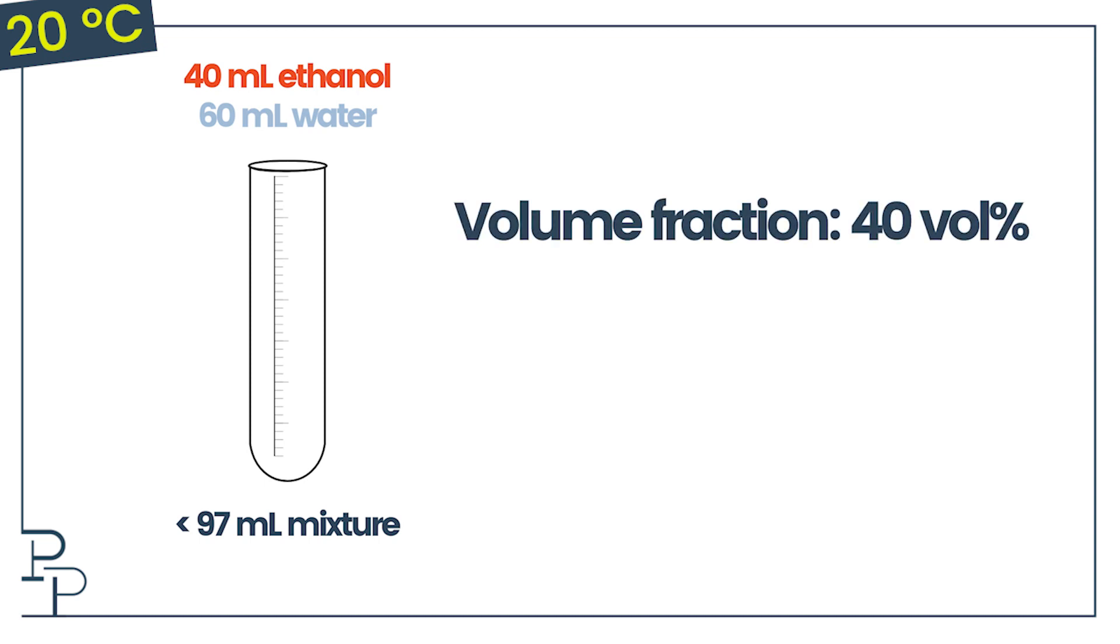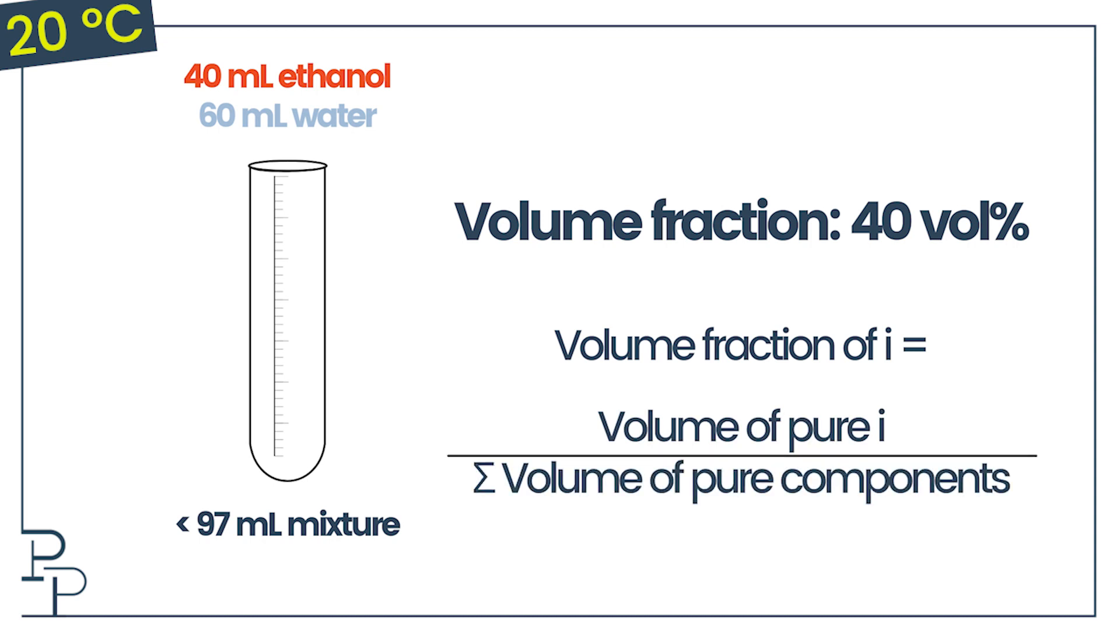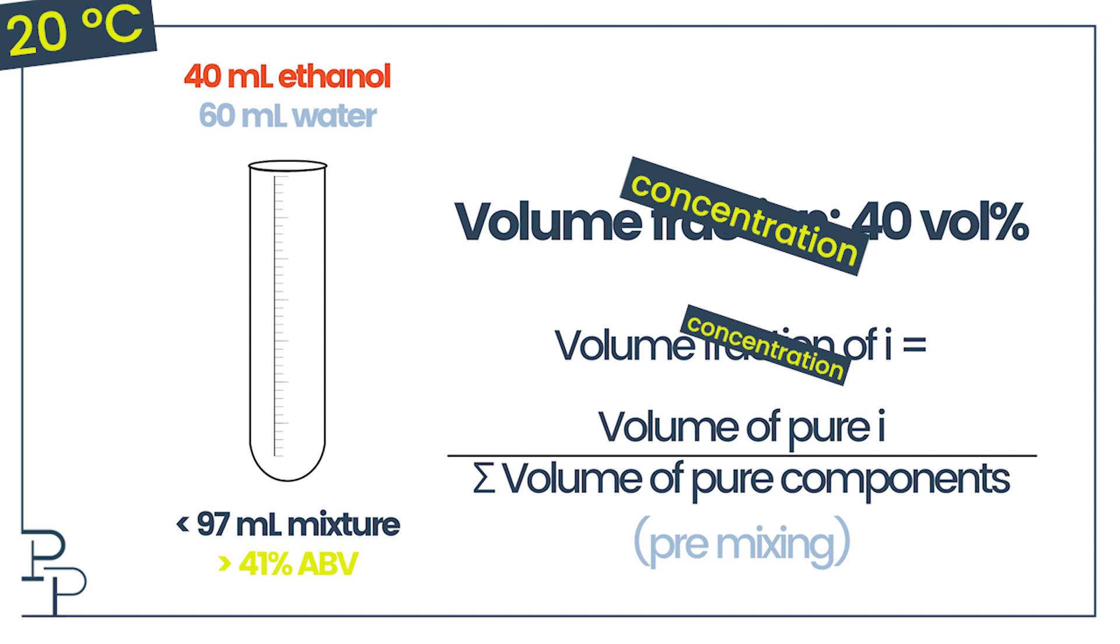When we mix alcohol and water, the volume is not conserved. If I take 40 milliliters of alcohol and add 60 milliliters of water at 20 degrees Celsius, the resultant volume of the mixture is just under 97 milliliters. In this example, we would say that the volume fraction of alcohol is 40% because volume fraction is the volume of a component divided by the sum of the pure component volumes before we mix them. But the mixture would be greater than 41% alcohol by volume. And that's because alcohol by volume is known as a volume concentration, not a volume fraction. A volume concentration takes the volume of a component and divides it by the mixture volume, so after mixing.